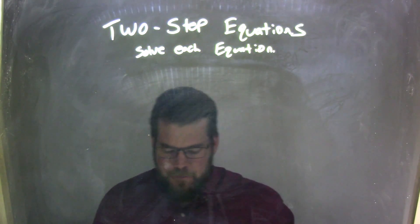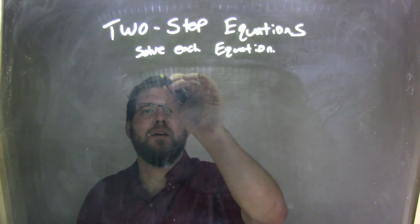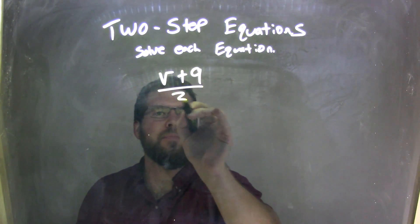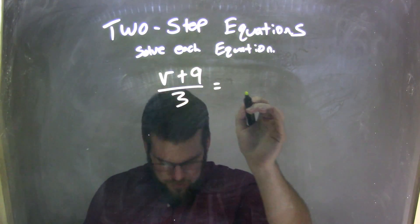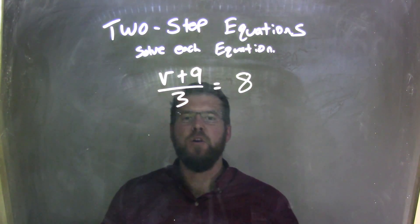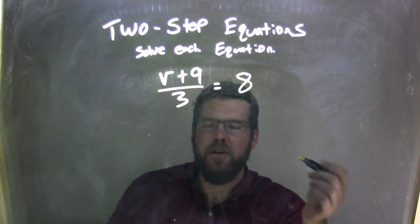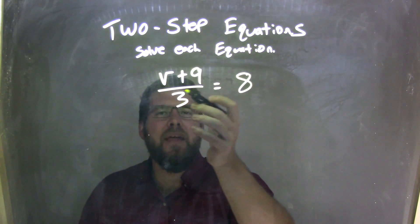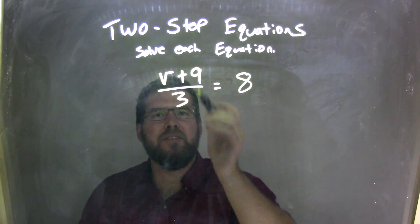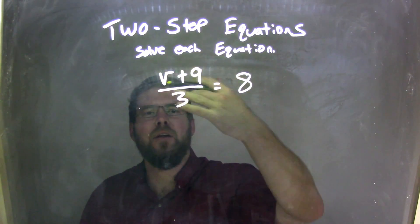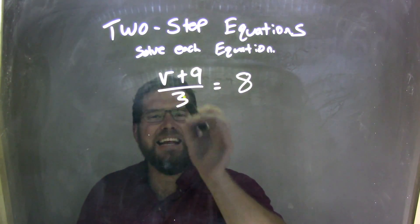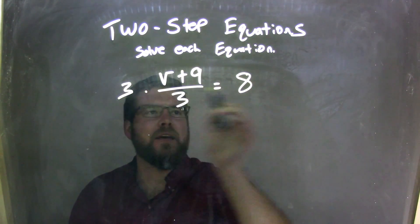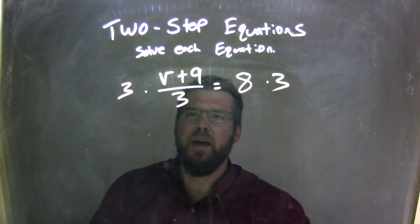If I was given this equation: v plus 9 over 3 equals 8. I have that division here — divided by 3 — I need to deal with first, because v plus 9 is in the numerator and the denominator is just a 3. I need to get rid of that. That's division, so the opposite of division is multiplication — multiply by 3 to both sides.